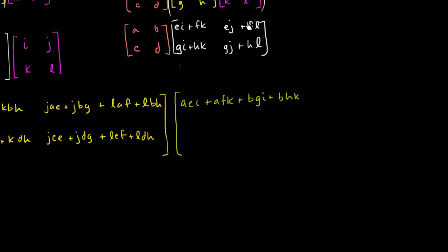And then you're going to have this row and this column. So it's AEJ plus AFL plus BGJ plus BHL. Close the brackets. Now you're going to have C times this plus D times this. So CEI plus CFK plus DGI plus DHK. And then finally home stretch. C times that plus D times this. So CEJ plus CFL plus CFL. And then you're going to have plus DGJ plus DHL.